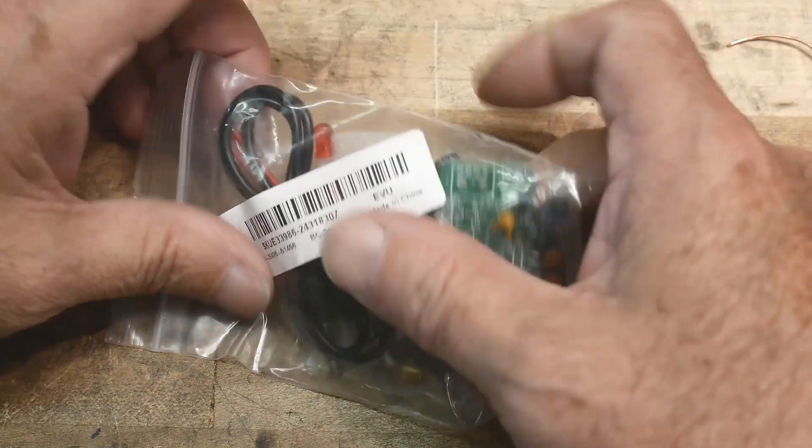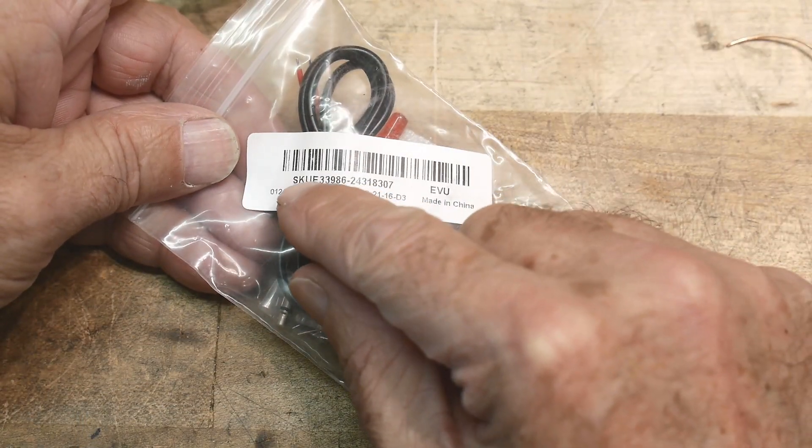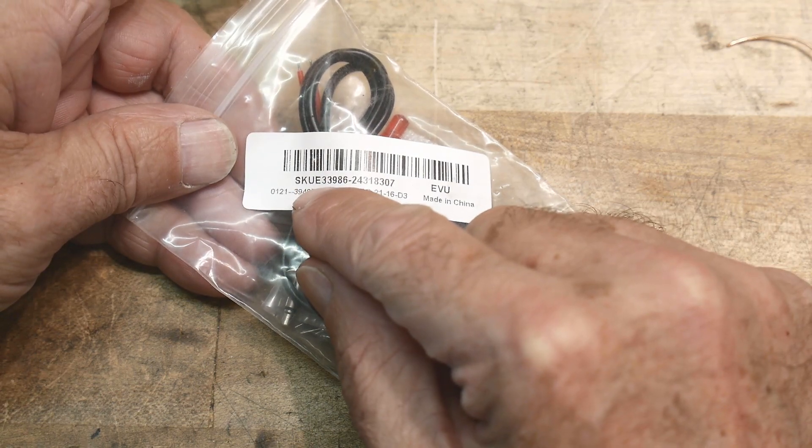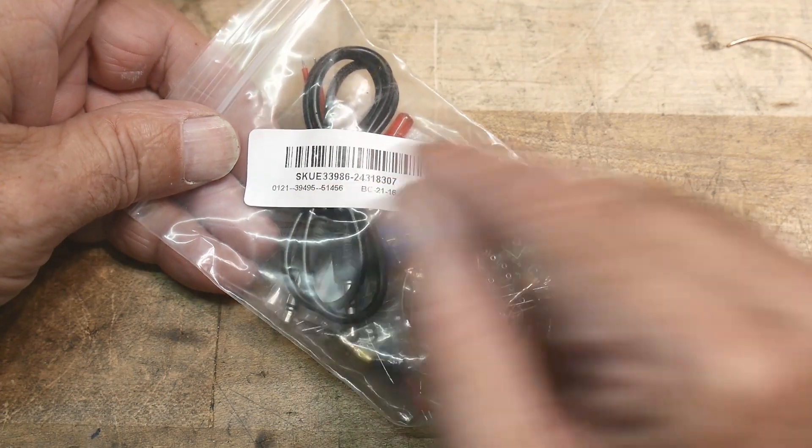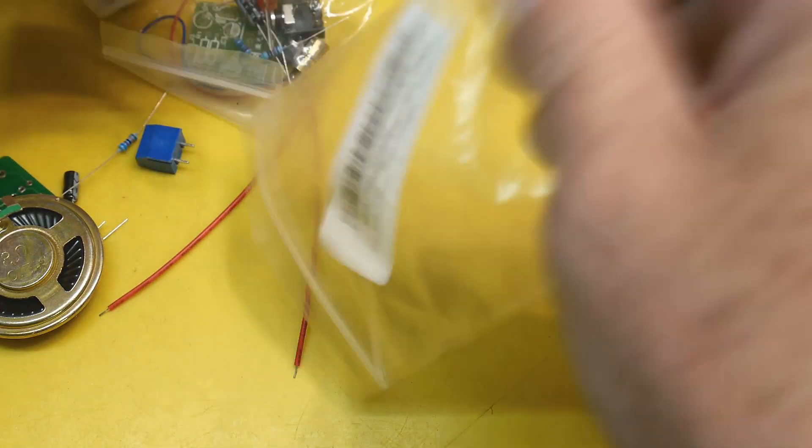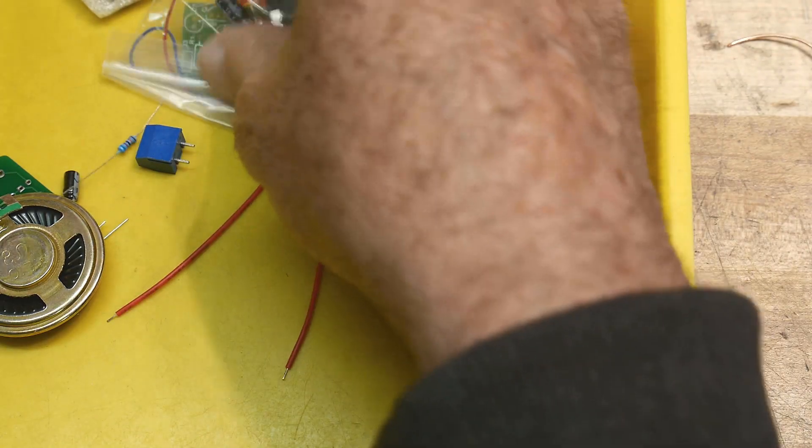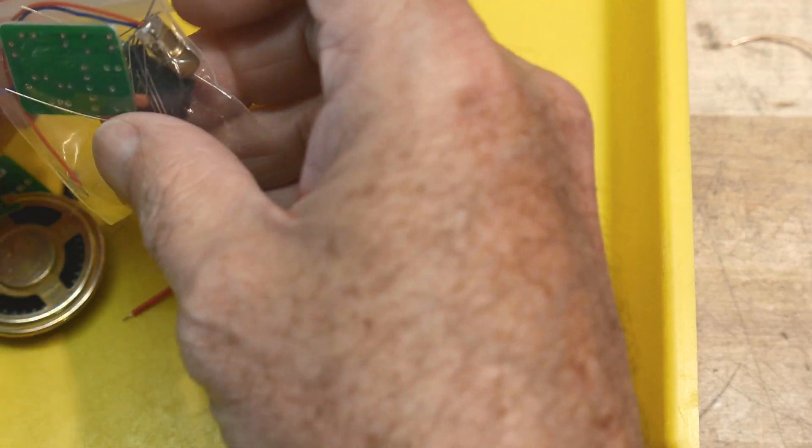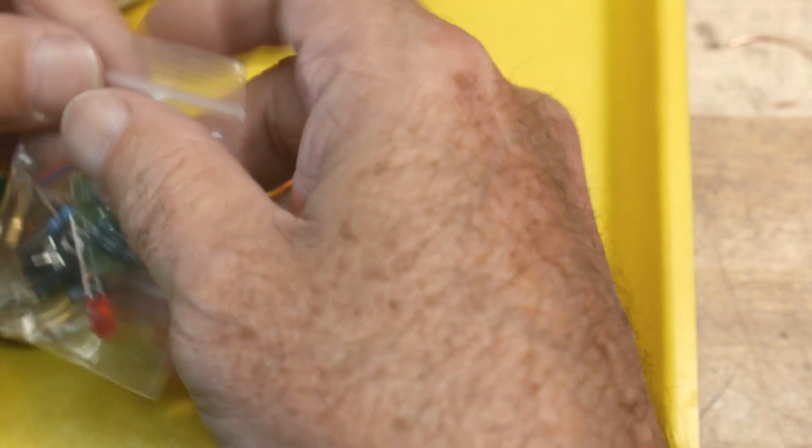All right. Chinese kit time. SKU E33986. Get it onto a tray. Let's see what we have here. Interesting, two bags. I think I know what this one is.